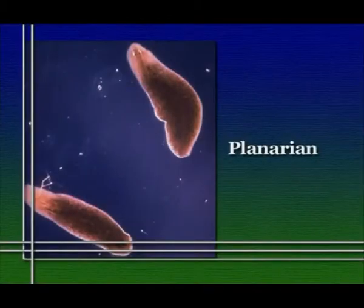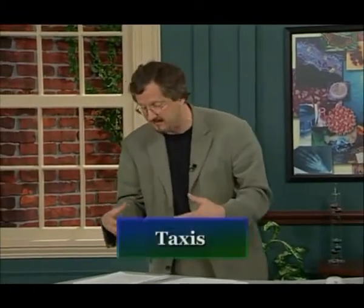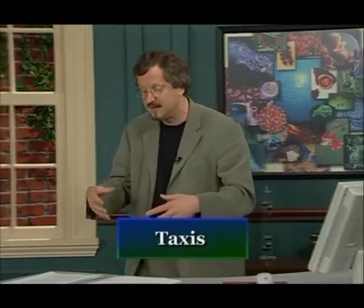Now let's take this one step further and consider a planarian. This is a small kind of flatworm — you often work with these in high school biology classes. If you take a planarian and put it in a dish that's illuminated from one side, it will face the source of light and actually move towards it. We call this kind of behavior a taxis, and in fact the planarian moving towards light is exhibiting what we would call phototaxis, which basically means movement towards light. The fact that animals are capable of these oriented movements isn't surprising given what we know about their sensory, neural, and motor capabilities.